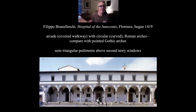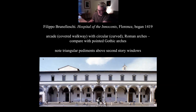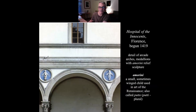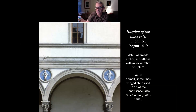The Hospital of Innocence was designed by Brunelleschi. There's this arcade — a covered walkway with a colonnade — Romanesque with semicircular arches; Gothic would have pointed arches. The triangular pediments above each of the second story windows is a classical element going back to the Greeks and also picked up by the Romans. These little medallions of Amorini — Amorini are little cupids, putti — little babies — and it's a hospital, so they look like they're bandaged.